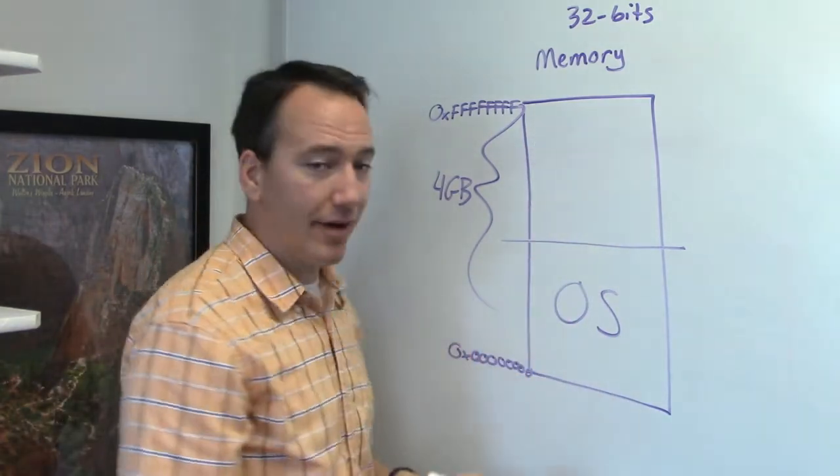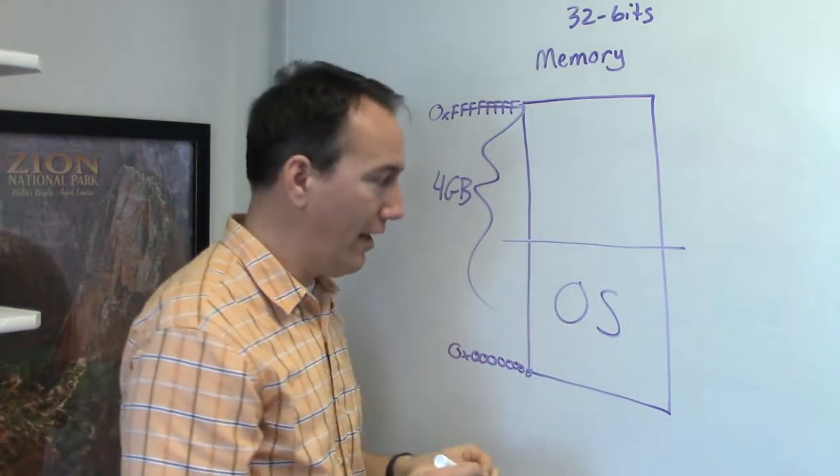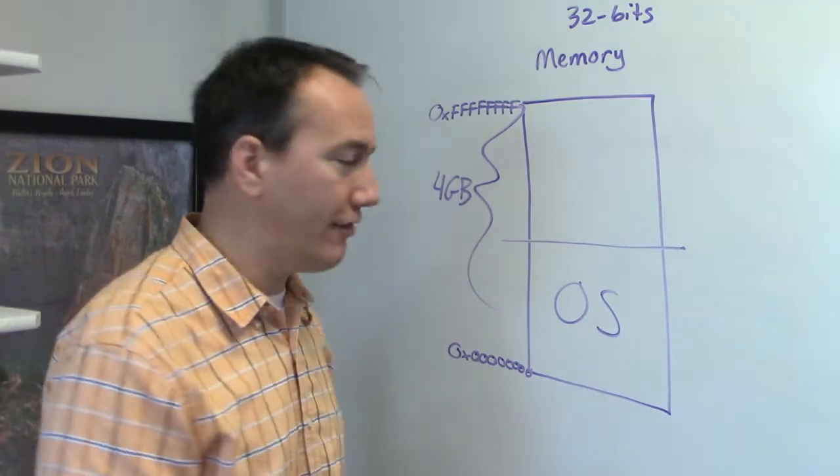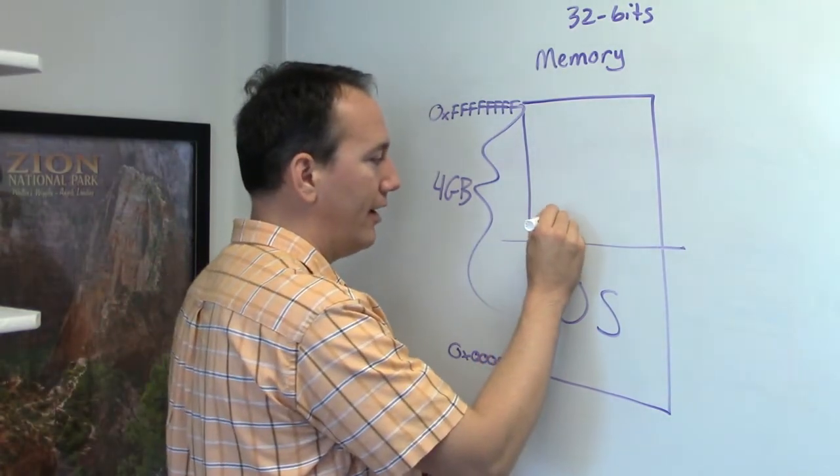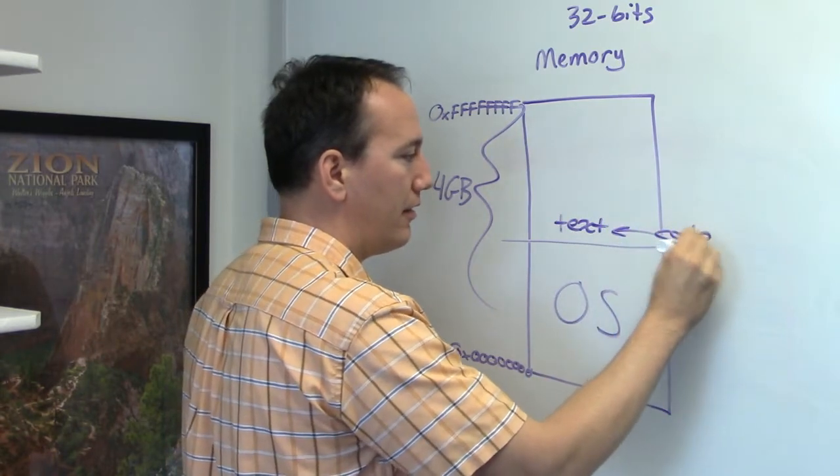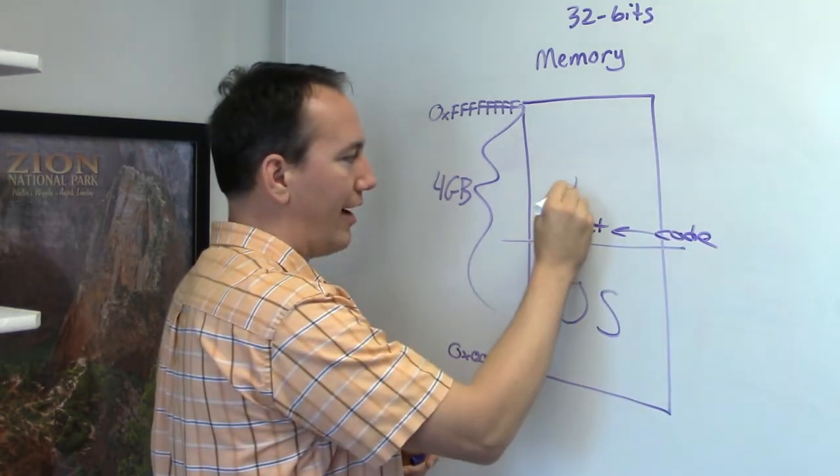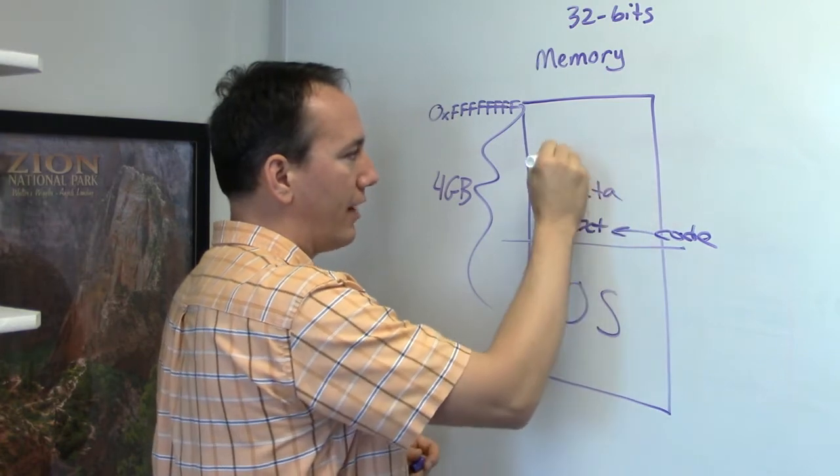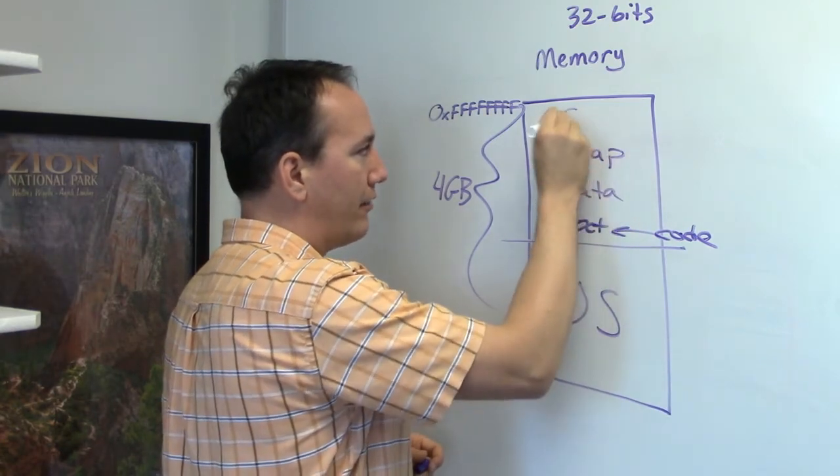The upper half of memory is divided up for each process to use. And it's organized into different segments. So we have one here called text. This is where the code is actually stored. And then on top of the text, we've got some data, we've got a heap, and we've got a stack.